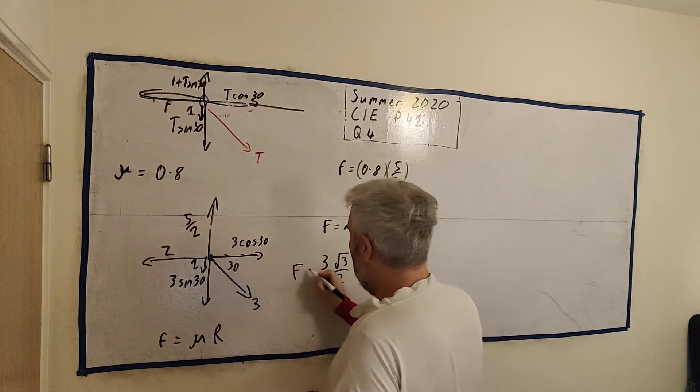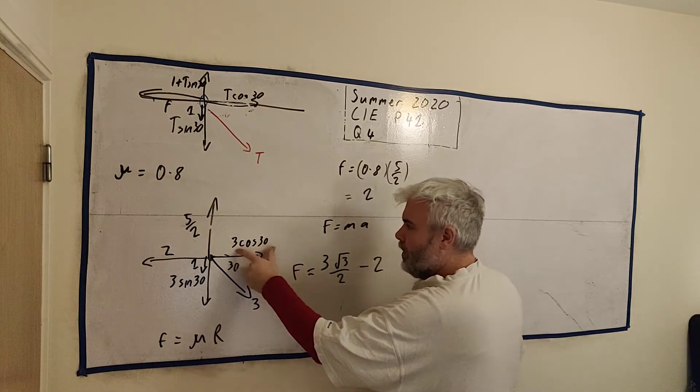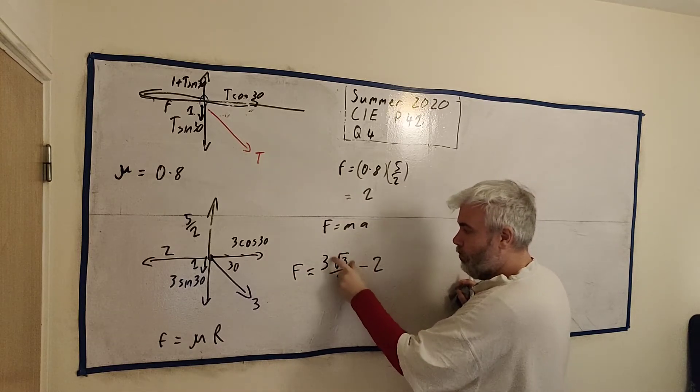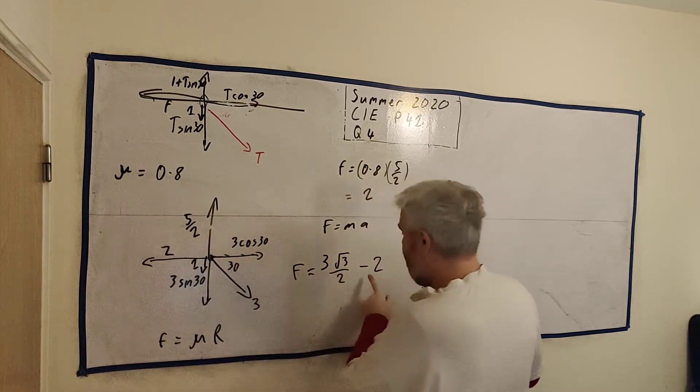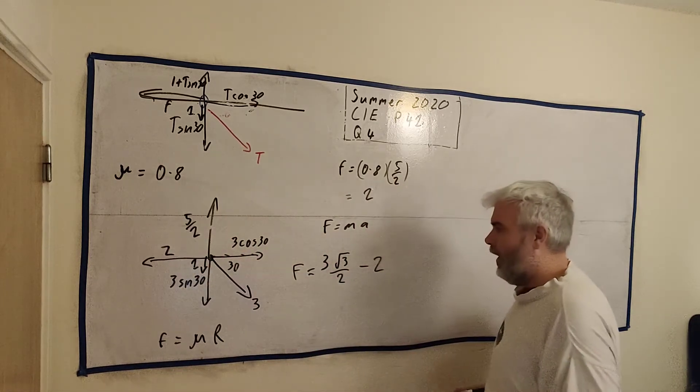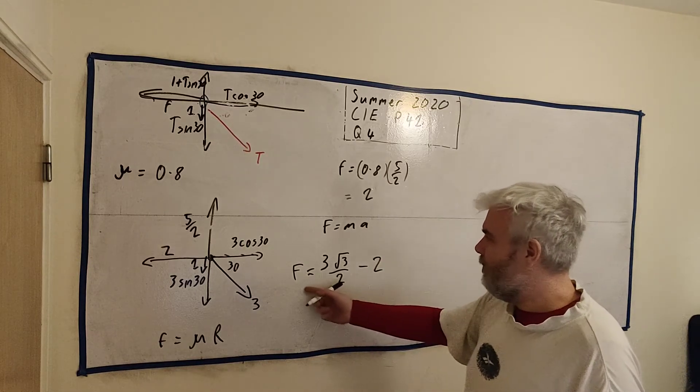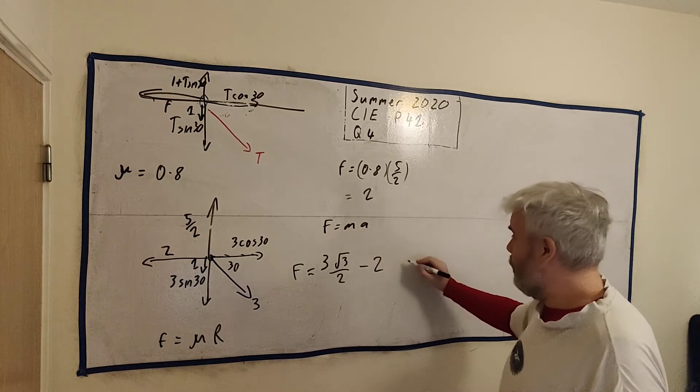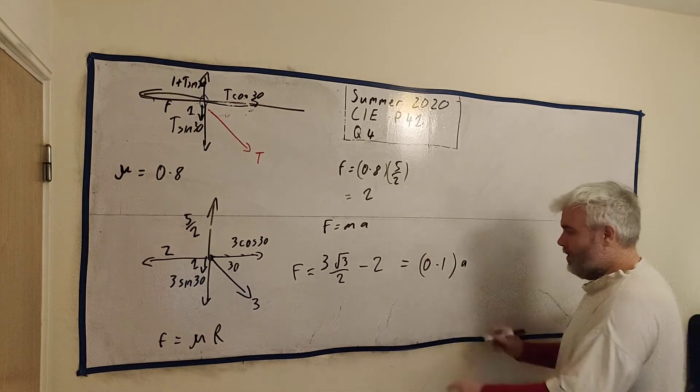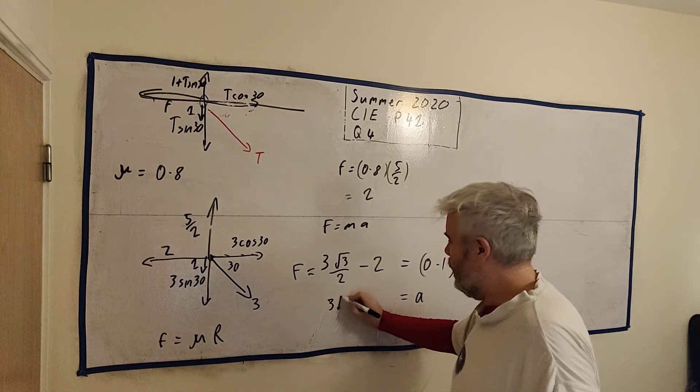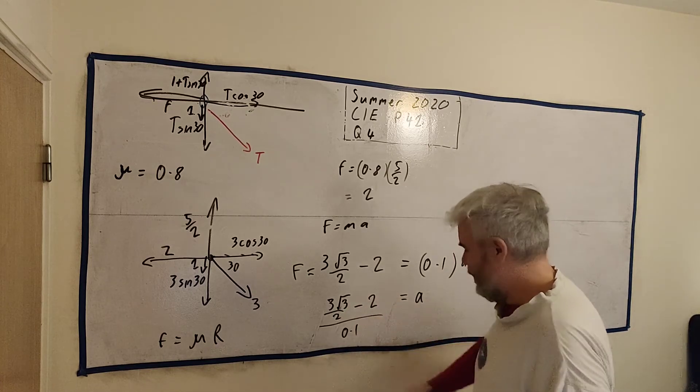And that would be 3 multiplied by the square root of 3 over 2 minus 2. See where I'm getting this? This is the total F of the system, the horizontal F anyway. We have 3 cosine 30. That's 3 multiplied by cosine 30. And then this is going the opposite direction. So we'll have minus 2. And yeah, that's fine. I can put that into a calculator now, but I'll do it at the end. So F is equal to this, but it's also equal to 0.1 times A.